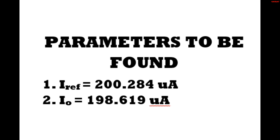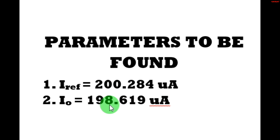The parameters found after analyzing the current source are reference current that is 200.284 µA and output current as 198.619 µA. Differential amplifier and constant current source both analyses are done together, i.e. in tandem.